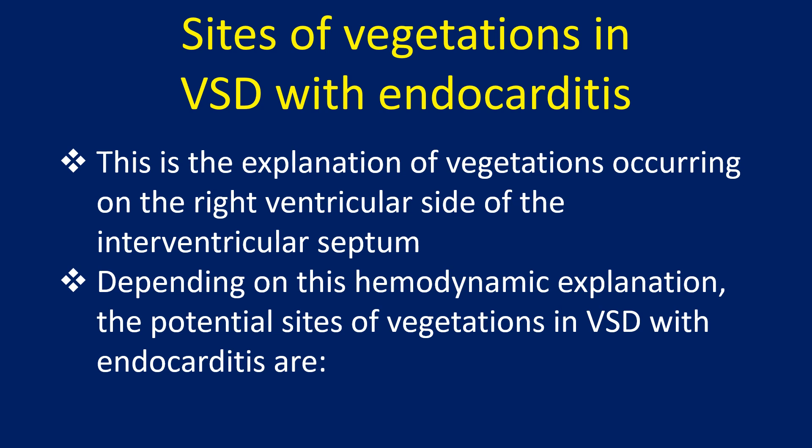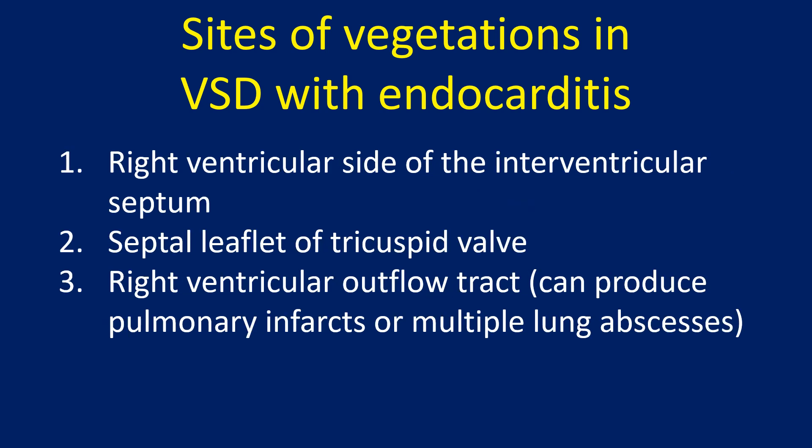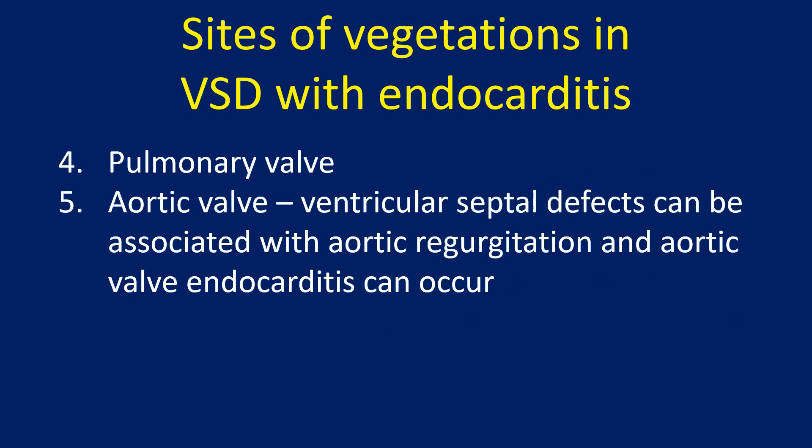Depending on this hemodynamic explanation, the potential sites of vegetations in VSD with endocarditis are: the right ventricular side of the interventricular septum, the septal leaflet of the tricuspid valve, the right ventricular outflow tract — which can produce pulmonary infarcts or multiple lung abscesses — the pulmonary valve, and the aortic valve, since ventricular septal defects can be associated with aortic regurgitation and aortic valve endocarditis.